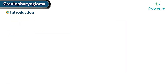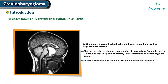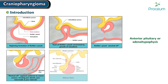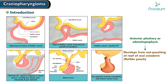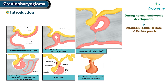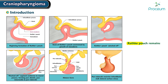Craniopharyngioma is one of the most common supratentorial tumors in children and is derived from remnants of the Rathke pouch. The anterior pituitary, or adenohypophysis, develops from the outpouching of the roof of the oral ectoderm called the Rathke pouch. During normal embryonic development, apoptosis occurs at the base of the Rathke pouch, detaching the gland from the roof of the mouth. If the Rathke pouch remains, it can become a benign solid cystic tumor called craniopharyngioma.